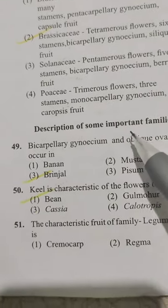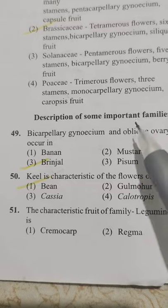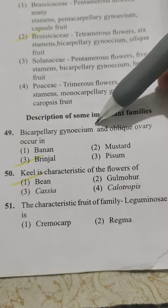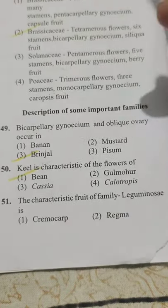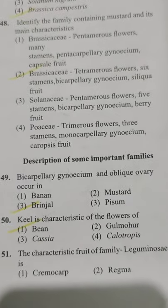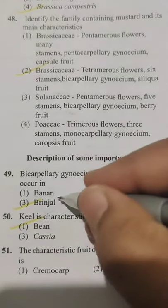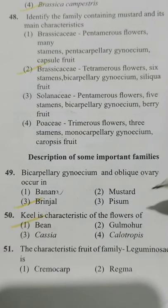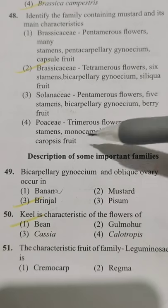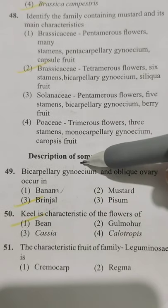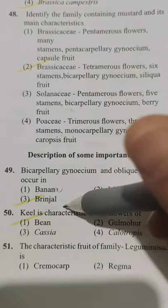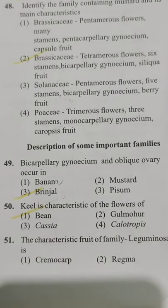Bicarpellary gynoecium and oblique ovary occur in — Option 1 banana, Option 2 mustard, Option 3 brinjal, Option 4 Paisal. Bicarpellary gynoecium with an oblique ovary occurs in brinjal — Option 3.